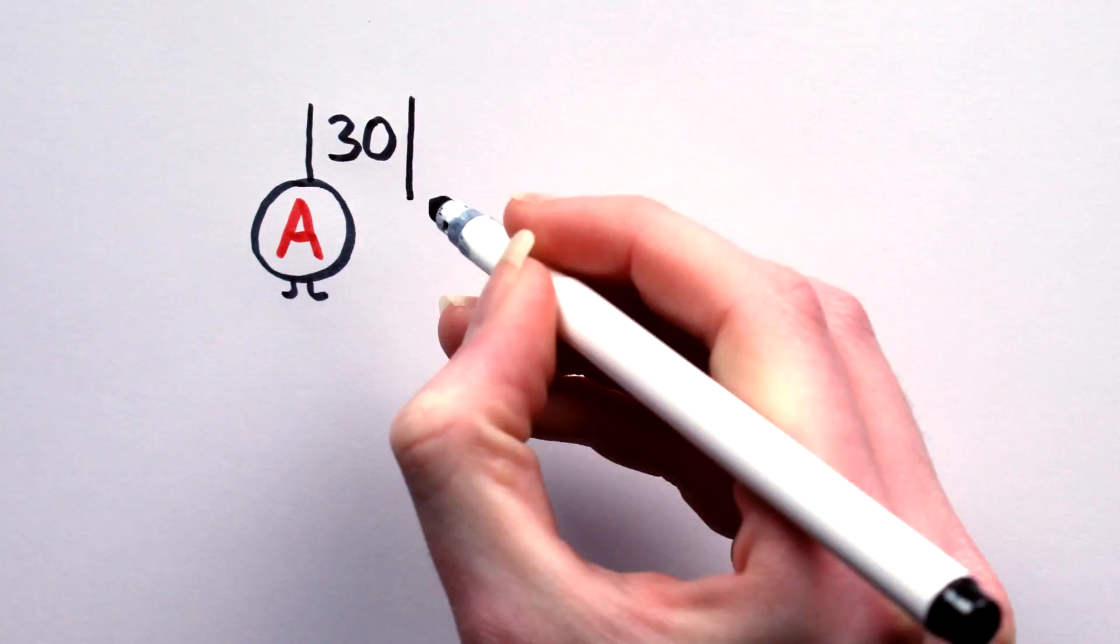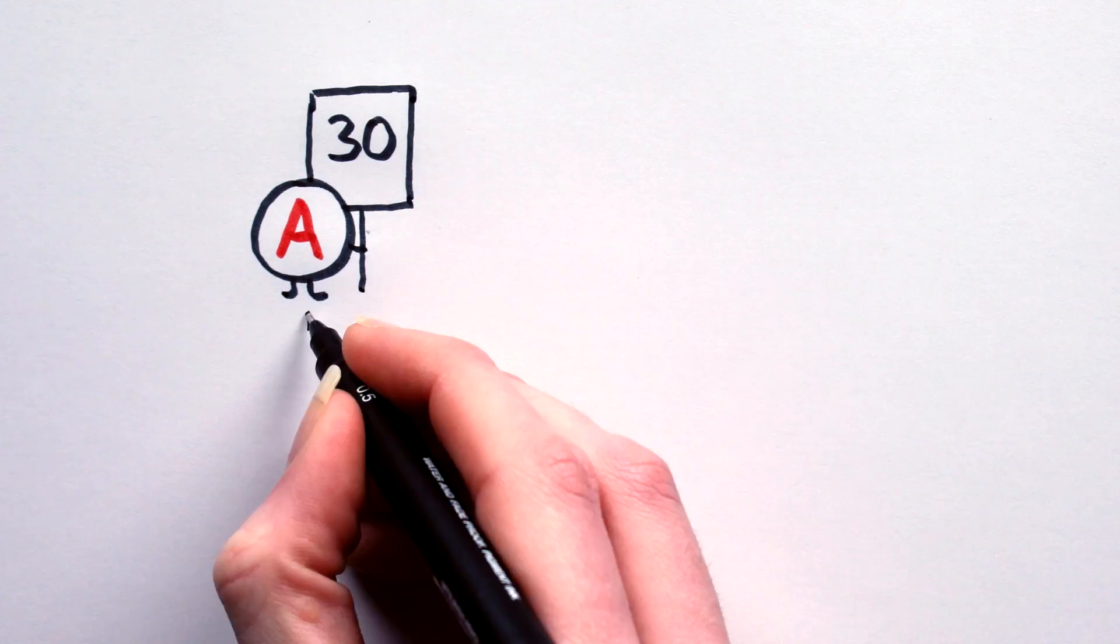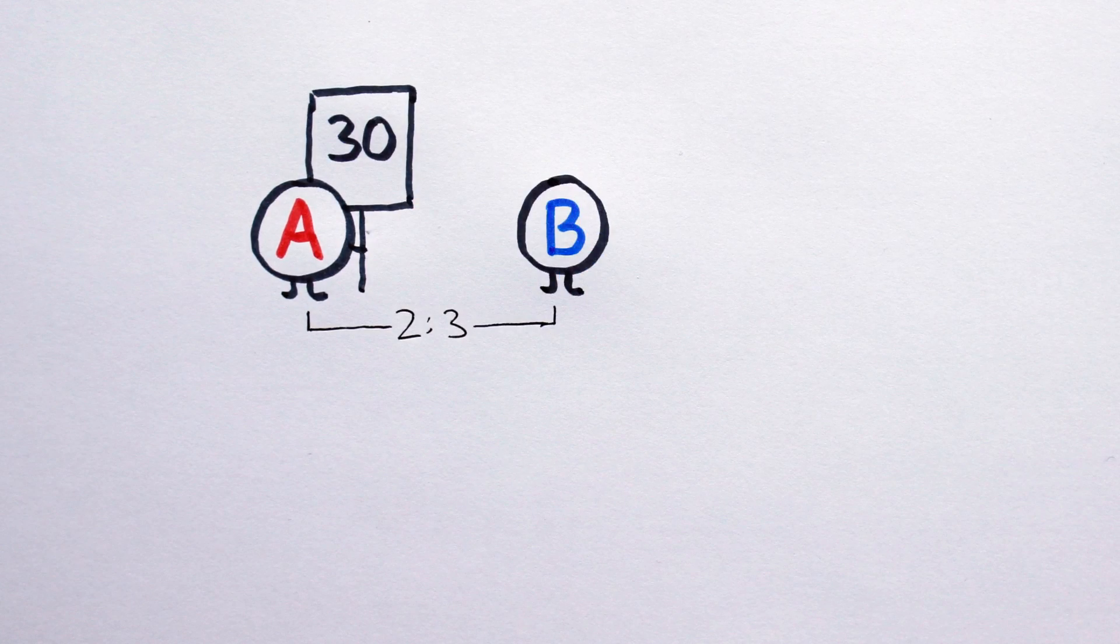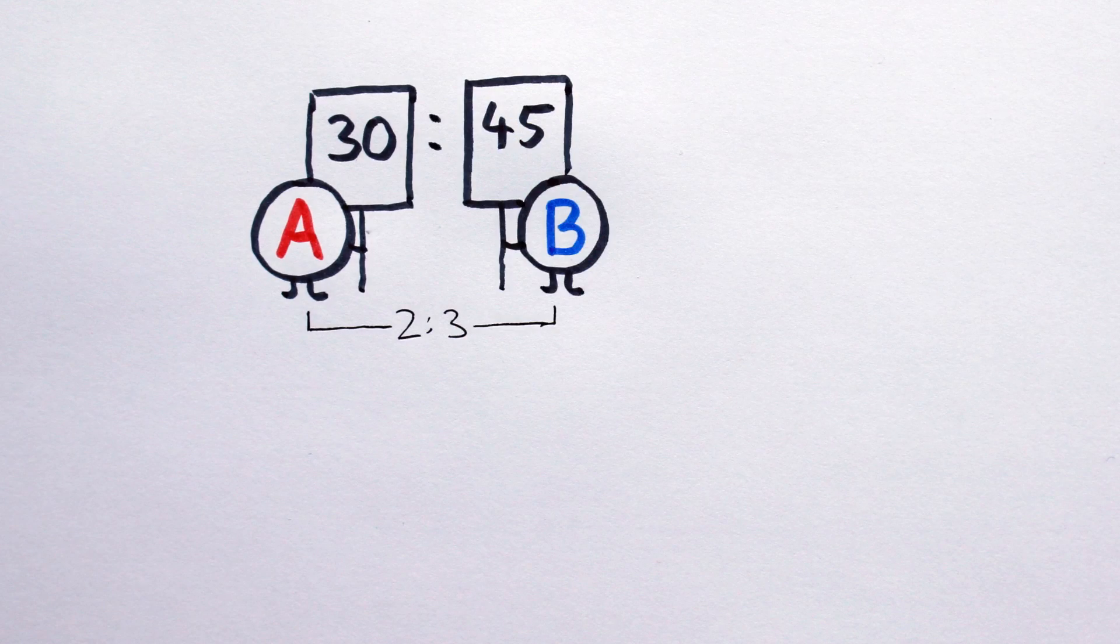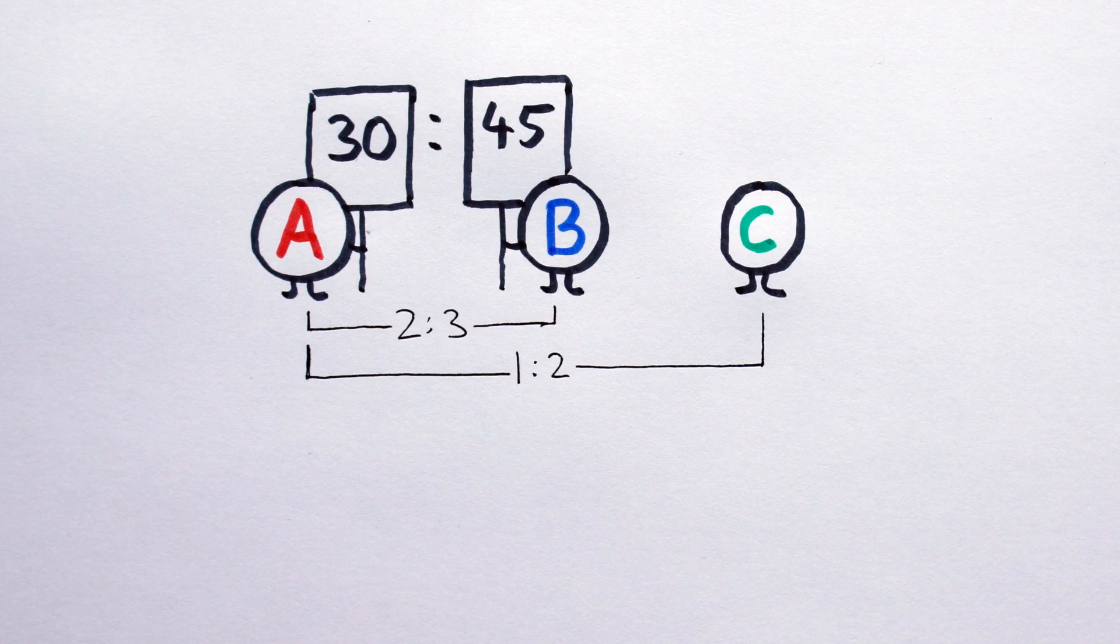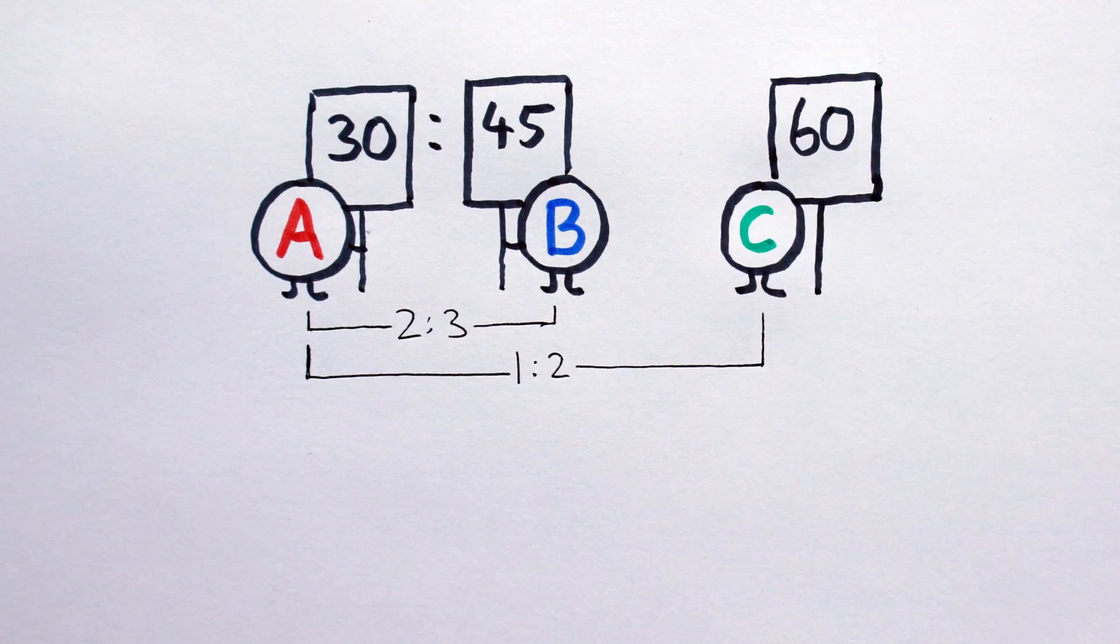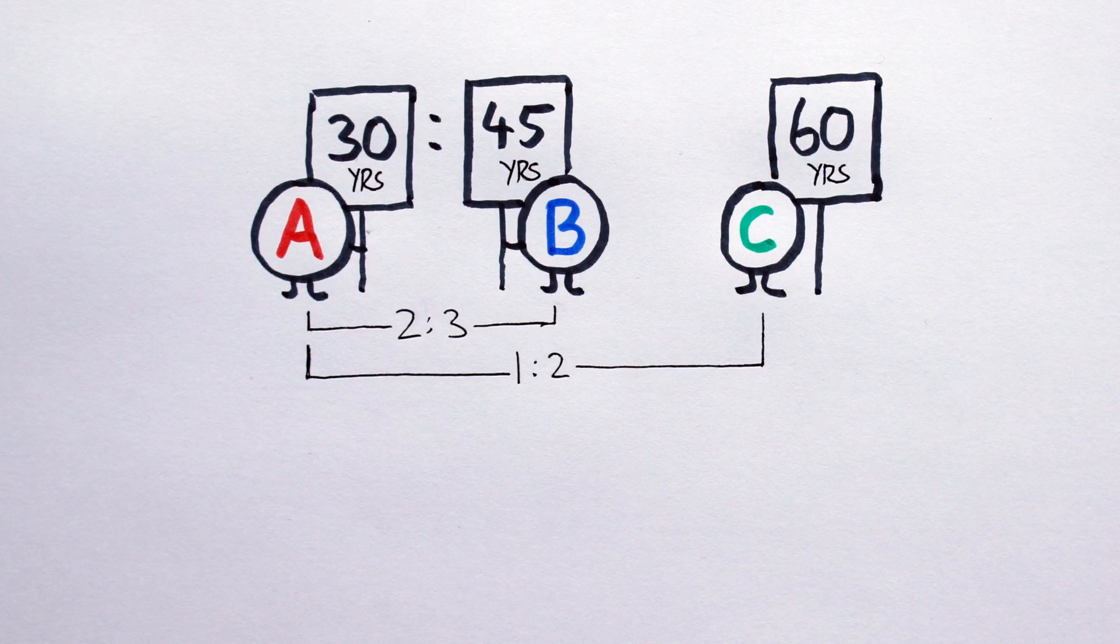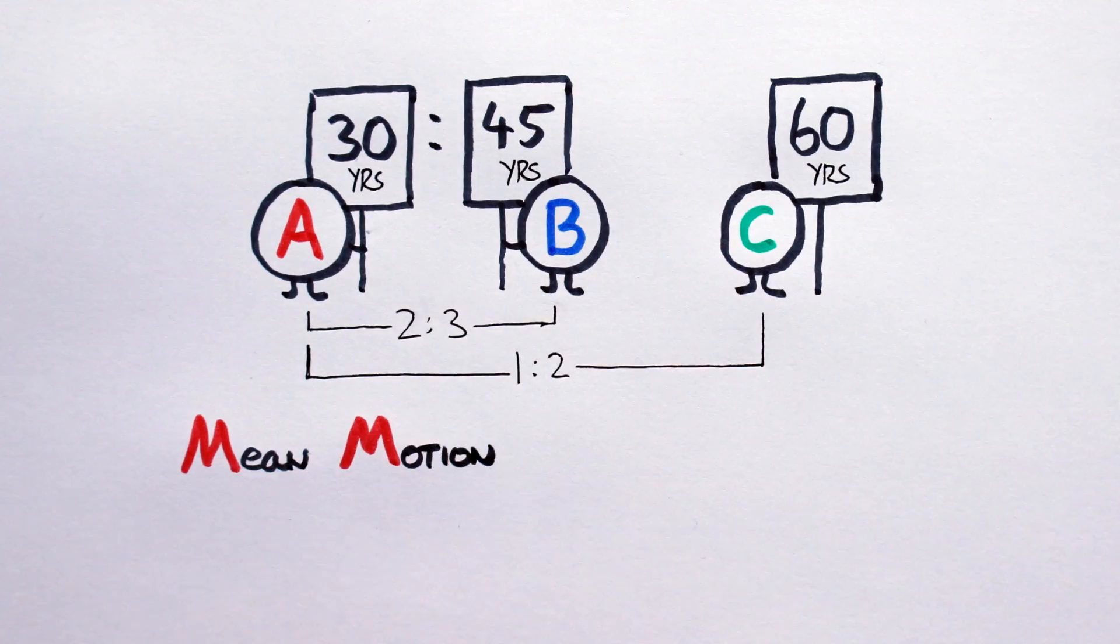Example: planet A here has an orbital period of 30 years and is in a two to three mean motion resonance with B, as it has a 45 year orbital period. Similarly, A and C are in a one to two mean motion resonance because C has a period of 60 years. If the relationship between the orbital period of any two planets can be boiled down to two small whole numbers, they are likely in resonance.